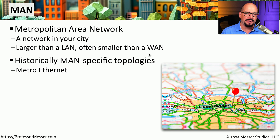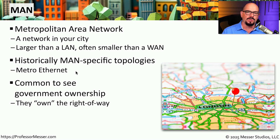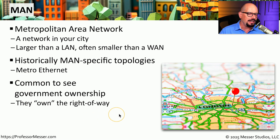Traditionally, these metropolitan area networks have been proprietary, but increasingly we've seen these standardized on Ethernet — specifically Metro Ethernet — which describes a type of Ethernet connectivity in our local city. You might also find that your local government has put their own fiber into the ground. Since they have right-of-way, they're able to put anything they would like inside of the pipes and create their own metropolitan area network using their own fiber.